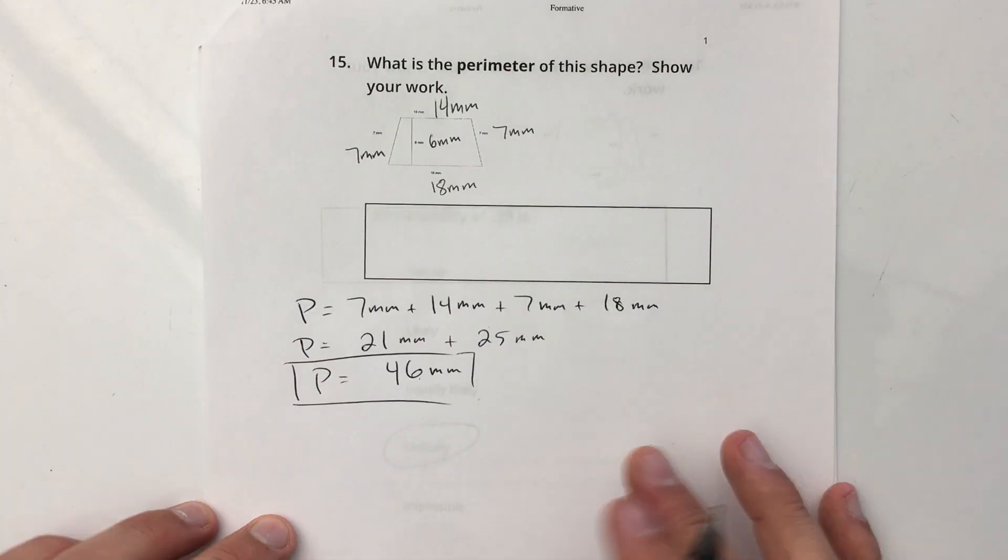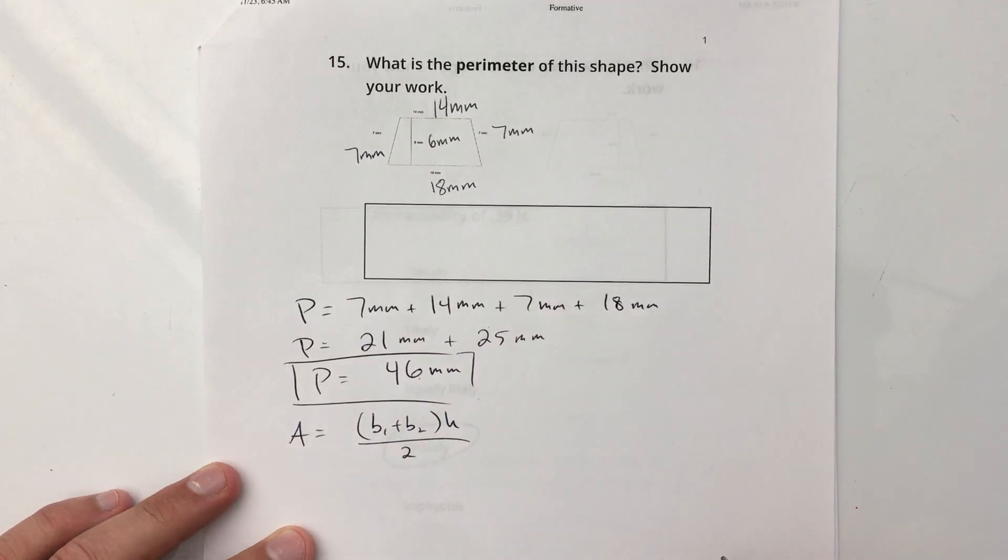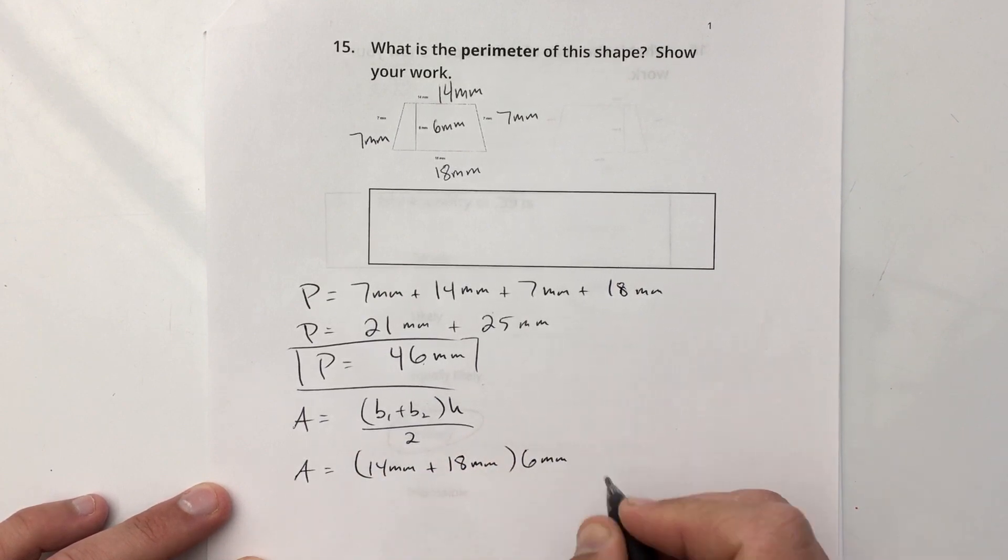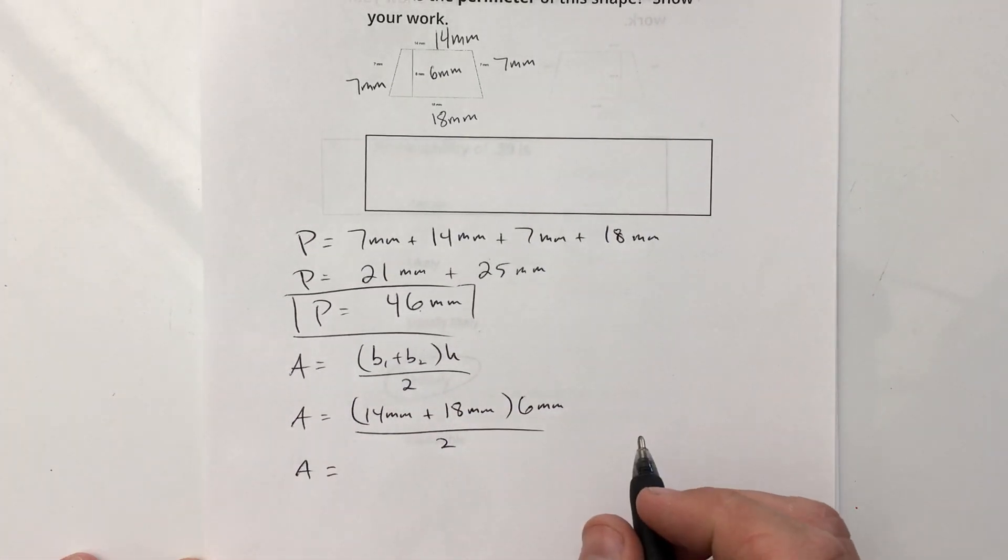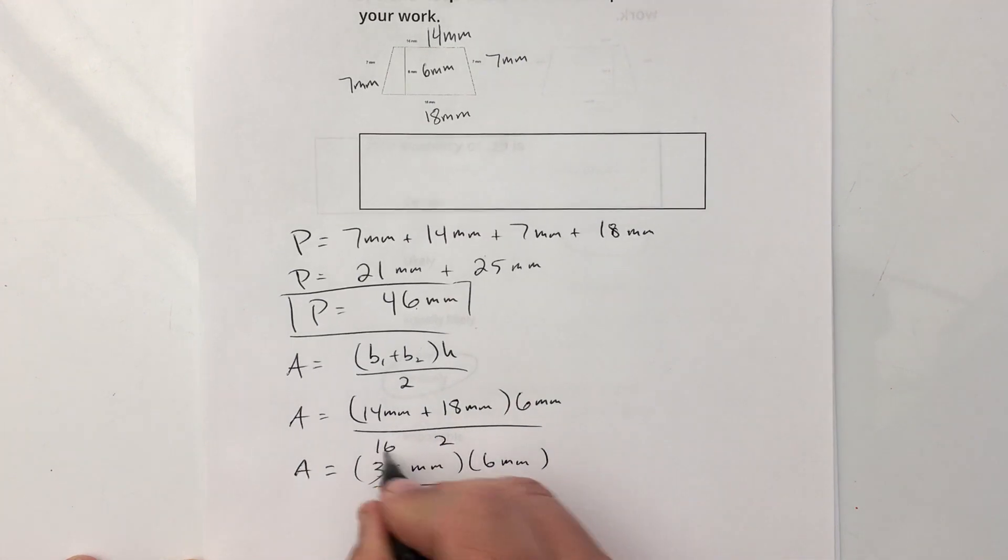I'm going to do the area on the same page here. Area of a trapezoid is base 1 plus base 2 times height, all of that divided by 2. My base 1 is 14 millimeters. My base 2 is 18 millimeters. My height is 6 millimeters. I'm going to divide the whole thing by 2. So I have 32 millimeters times 6 millimeters divided by 2. I'm going to simplify here. I'm going to divide the 32 by 2. So that goes to 1. And this goes to 16. And now I have 16 times 6, which is 96 millimeters squared. Because I have millimeters times millimeters.